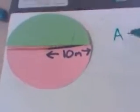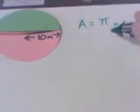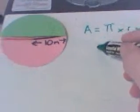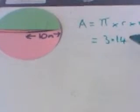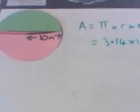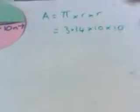If you remember, the area of a circle is pi times radius times radius. That's 3.14 times 10 times 10, because very kindly we've been given the radius here as 10 meters.